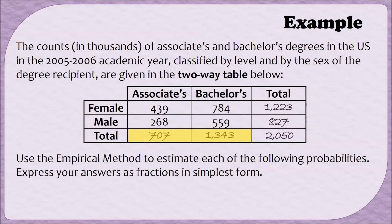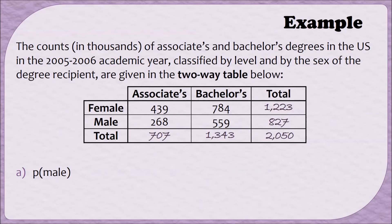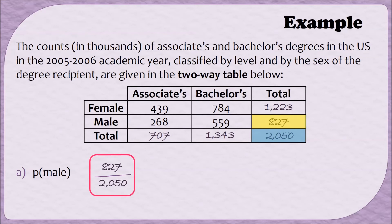We've been told to use the empirical method to estimate some probabilities and to express our answers as fractions in simplest form. Part A wants us to find the probability that somebody in this table was male. To find this probability, we need to find the total number of males and divide that by the total number of people. The total in the row for males was 827, so that's our numerator, and the total number of people—2,050—is our denominator. This fraction doesn't simplify, so 827 over 2,050 is our answer.